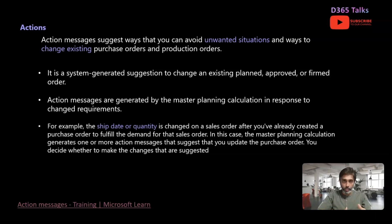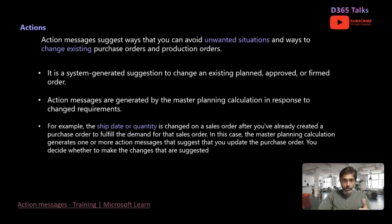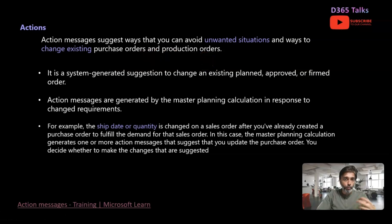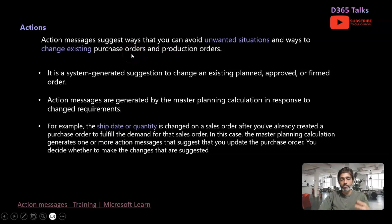Actions are a fantastic way to accommodate those changes which happened due to modifications in the ship date or quantity, so that those changes can move upstream to fulfill the orders happening downstream. Action messages are ways to avoid unwanted situations and ways to change existing purchase orders and production orders. Primarily these actions will not help in managing planned transfer orders, but in terms of changing existing production orders or purchase orders, you will be able to make those impacts.